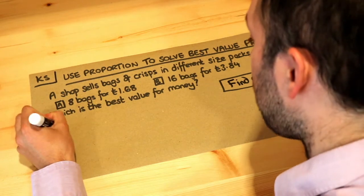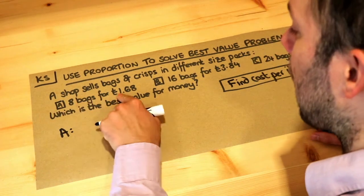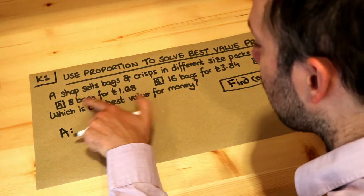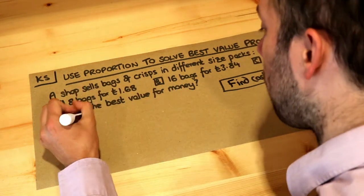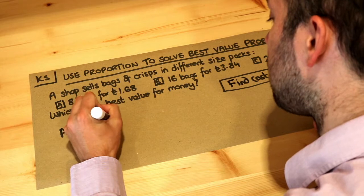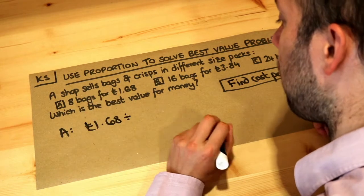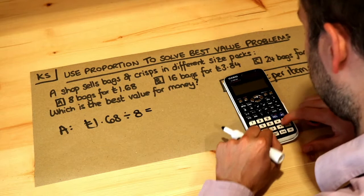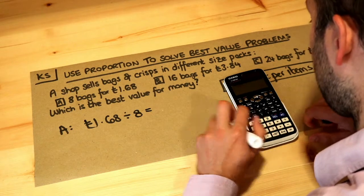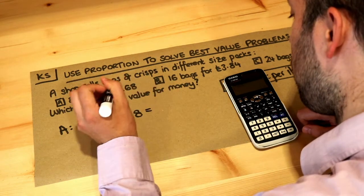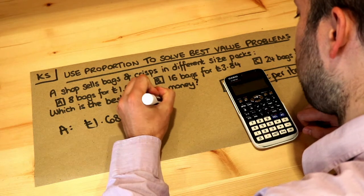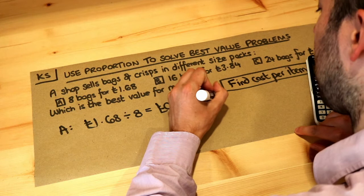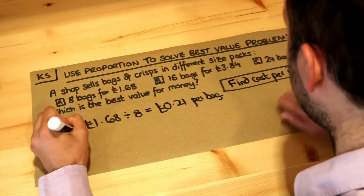So for option A, if 8 bags cost £1.68, how can we find the cost of 1 bag? Well, we just need to divide £1.68 by 8 to find the cost of 1 bag rather than 8 bags. Using a calculator, that gives us 0.21 pounds, or 21p per bag. So that's the cost per packet of crisps.